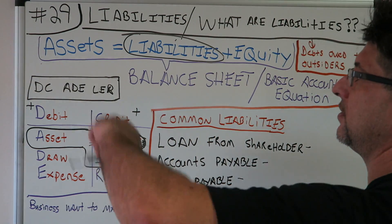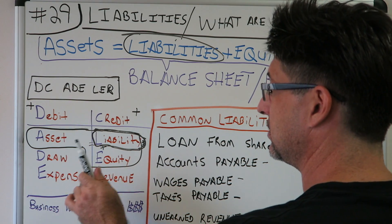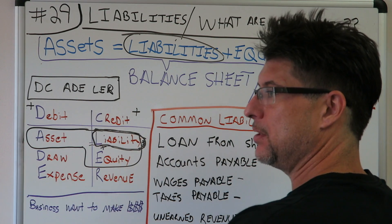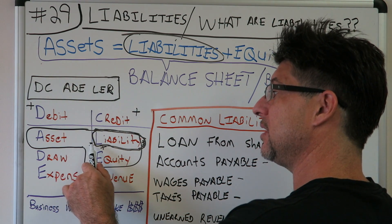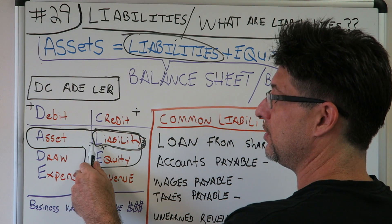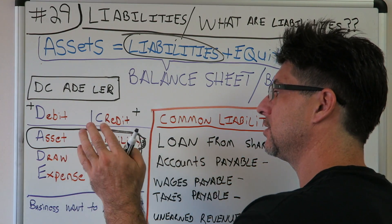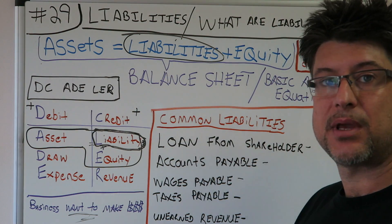Let's assume you're taking a test or a quiz. You already have DC Adler written down — debit, credit, asset, draw, expense, liability, equity, revenue — normal balances, positive balances. Today we're gonna look at liabilities. The DC Adler also has the balance sheet in it: assets equal liabilities plus equity. These equal each other.